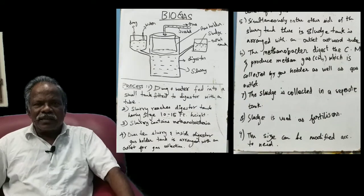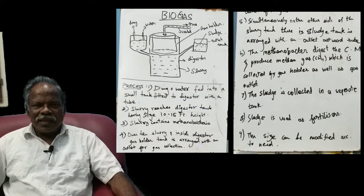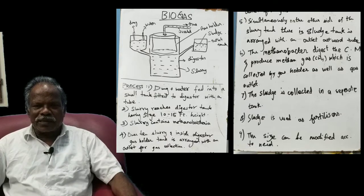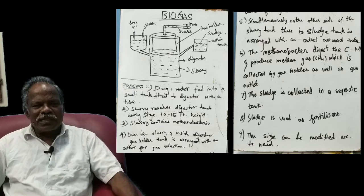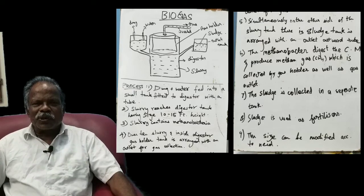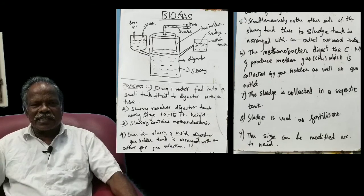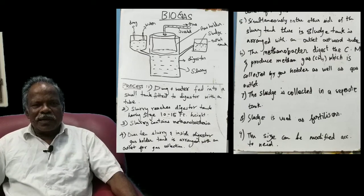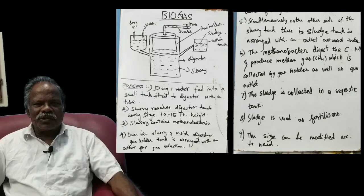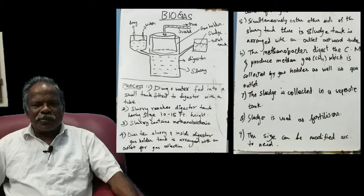The topic for today's discussion is biogas plant and how biogas is prepared. Biogas means gas produced from biomaterial, that is cowdung. The biogas is nothing but methane CH4, carbon dioxide, and hydrogen combined together.